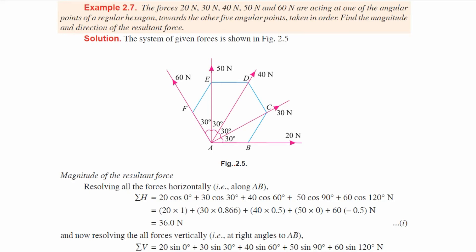Hello friends, welcome to Civil Engineering Exam. Today we're going to see a problem related to engineering mechanics on the topic of magnitude and direction of the resultant force. The question is: forces of 20 Newton, 30 Newton, 40 Newton, 50 Newton, and 60 Newton are acting.